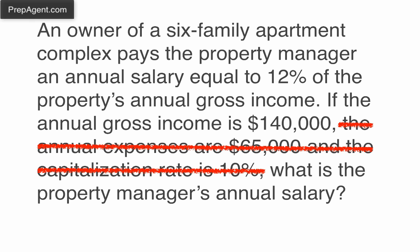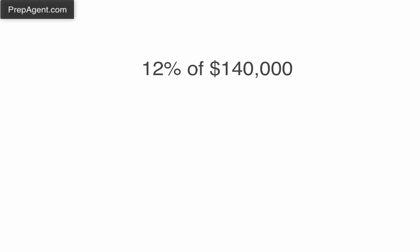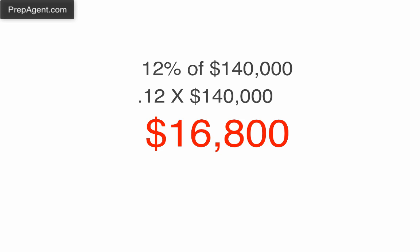All we have to do is think: what is 12% of $140,000? Going back to some basic middle school math, we know we need to change that percent to a decimal, and we do that by moving the decimal over two spots. So we get 0.12 times $140,000, and that leads us to our answer of $16,800.